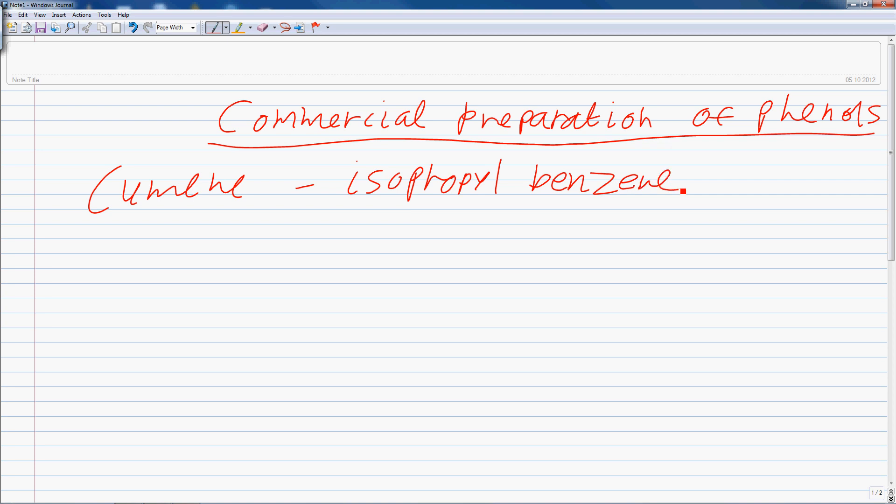Now let's first learn how this cumene or isopropyl benzene is prepared. Cumene is prepared by Friedel-Crafts alkylation of benzene with propene in the presence of phosphoric acid at 523K temperature.